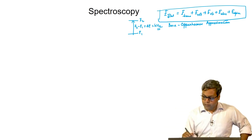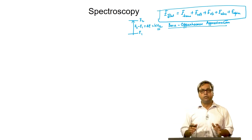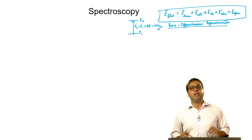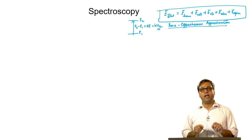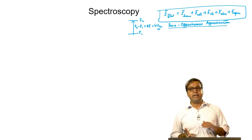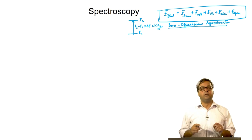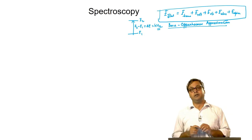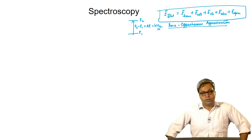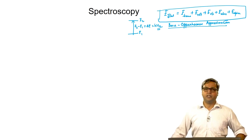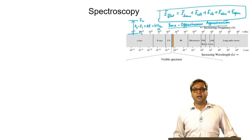We will discuss the Born-Oppenheimer approximation later in greater detail. When delta E for a particular degree of freedom matches the frequency of the electromagnetic radiation, we have a certain form of spectroscopy. For example, when delta E for vibrational motion matches H·nu in the infrared region, we have IR spectroscopy, also known as vibrational spectroscopy. Let us now look at the electromagnetic spectrum, which can be divided into different regions.